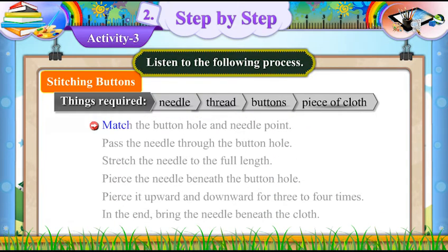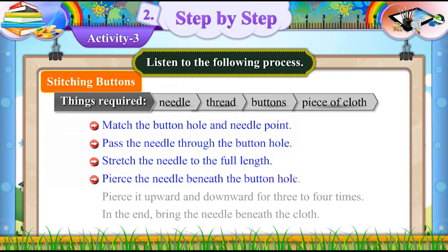Match the buttonhole and needle point. Pass the needle through the buttonhole. Stretch the needle to the full length. Pierce the needle beneath the buttonhole.